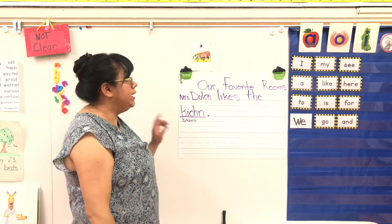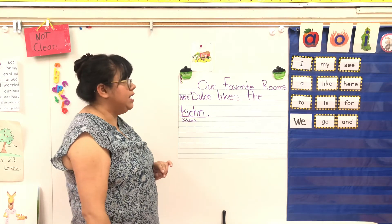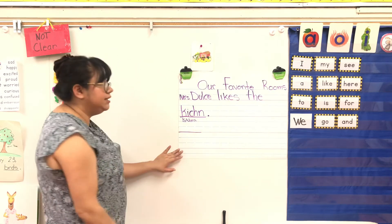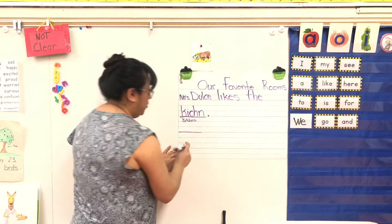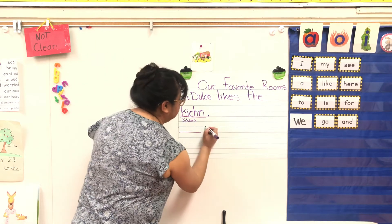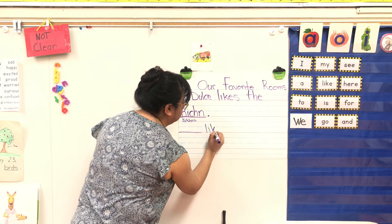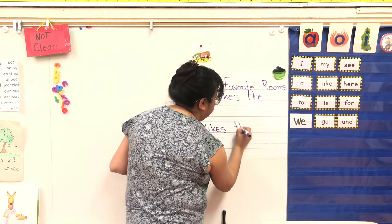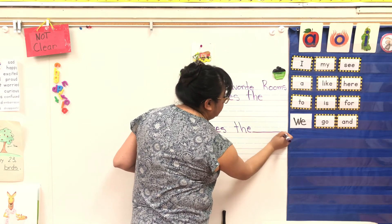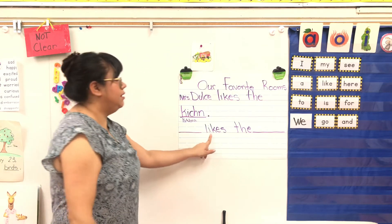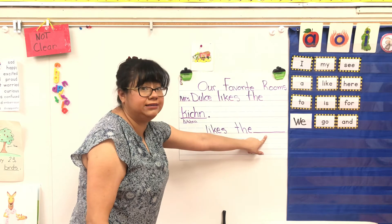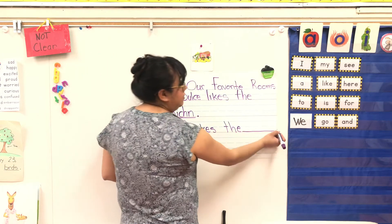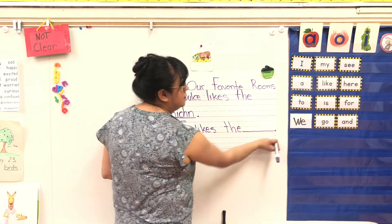Now, I want to know what is your favorite room in your house. So you're going to start with your name and then tell me. We're going to say: your name likes the, and then you tell me what you like. Don't forget your punctuation. It's probably going to be a telling sentence because you're telling us what you like.